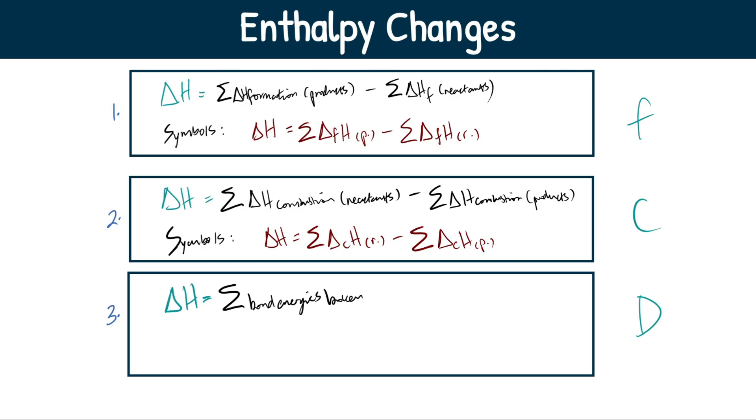This is going to equal sum of the bond energies broken minus sum of bond energies formed or bond energies made. I'm going to put formed. I like formed better, but however you remember it is all good.